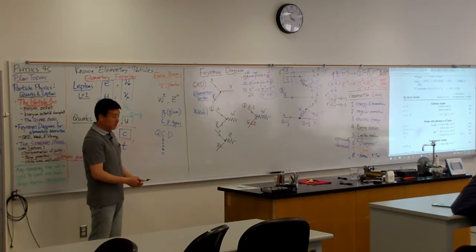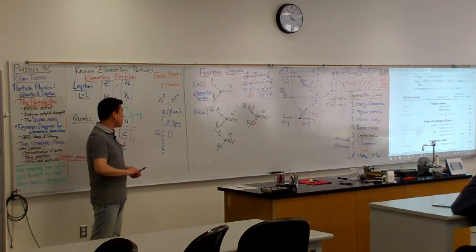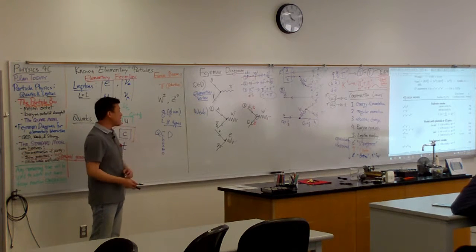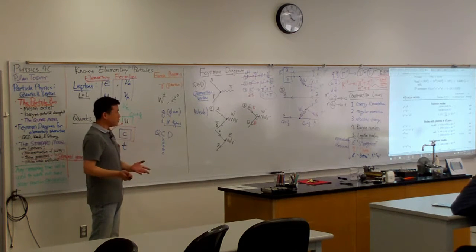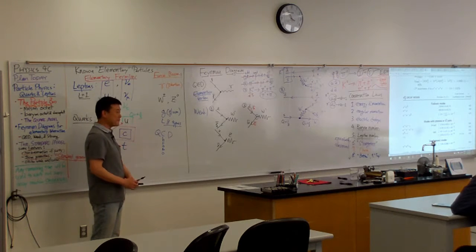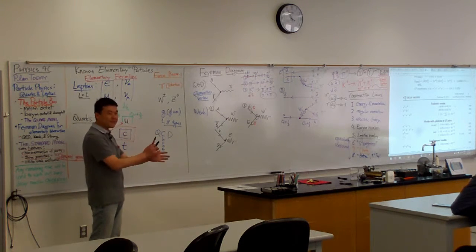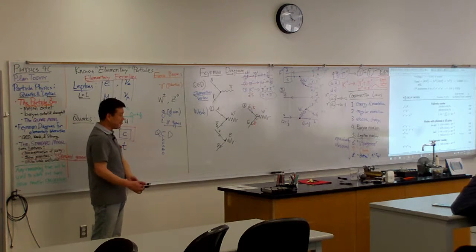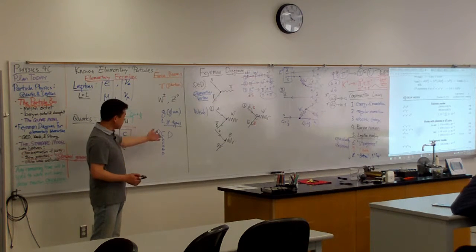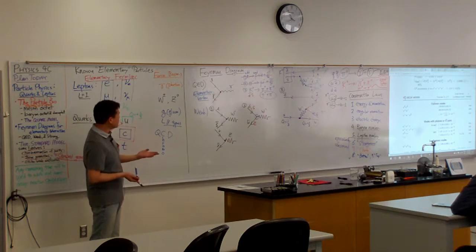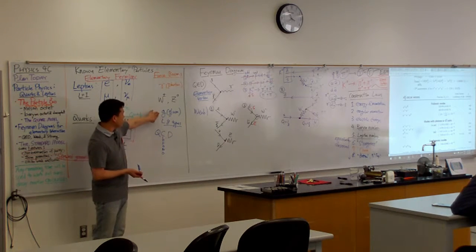Chromo as in color. This is where particle physicists get very fanciful. What they call color has nothing to do with literal color. It's like, what are you talking about? It's shorter wavelengths than visible, so there's no color involved here. What they are using is they are using the idea of color theory to express the symmetry that's involved in the strong interaction.